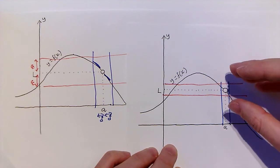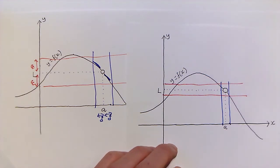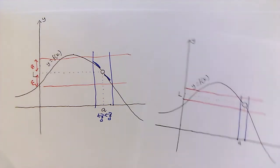the function takes values which lie within this narrow strip. Or in other words, they lie within a distance epsilon of the limit l. So let's look at an example.